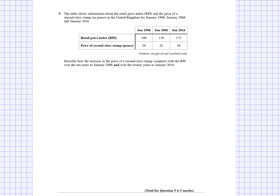I can see the RPI values: 1996 appears to be the base. There's a 29% increase going from 1996 to 2006, and a 72% increase going from 1996 to 2016. The price of the second-class stamp was 20p in 1996, 23p in 2006, and 54p in 2016. The question asks me to describe how the increase in the price of a second-class stamp compares with the RPI over 10 years to 2006 and over 20 years to 2016.